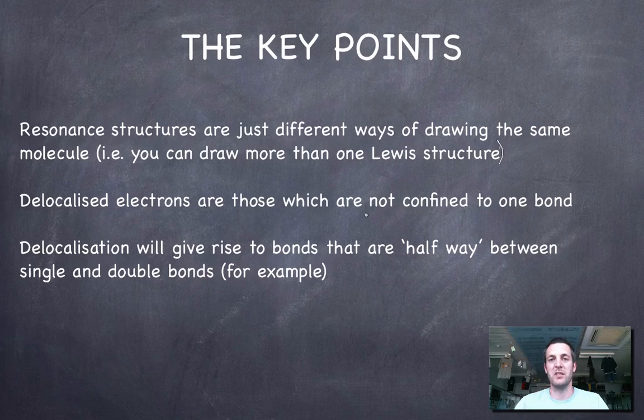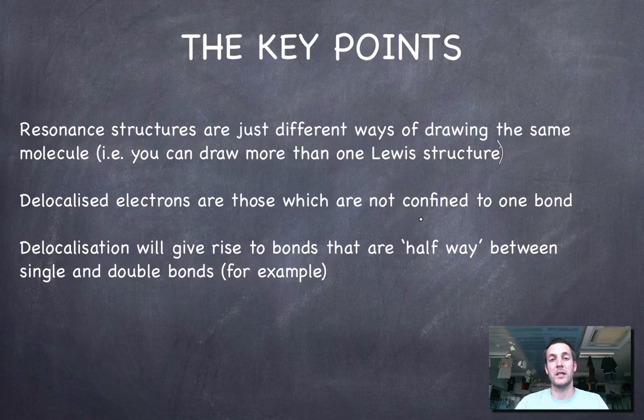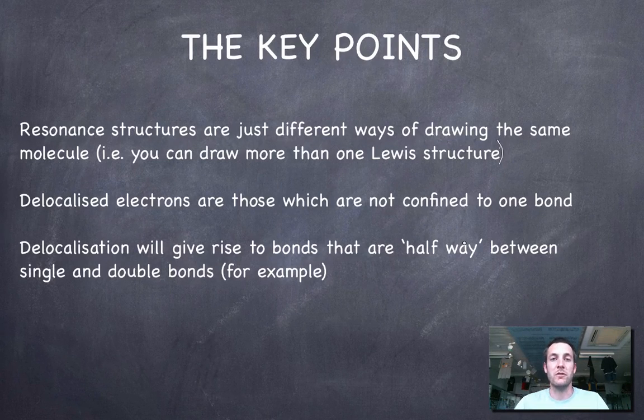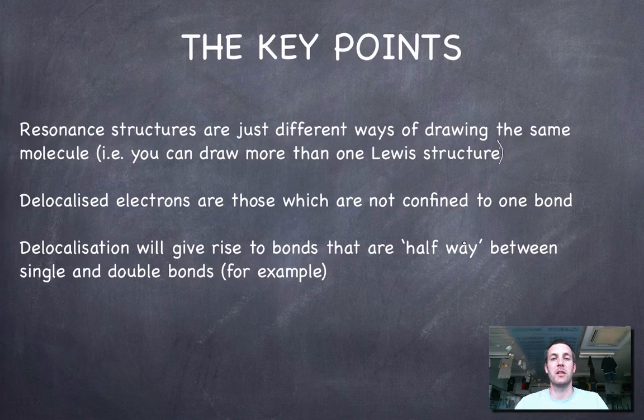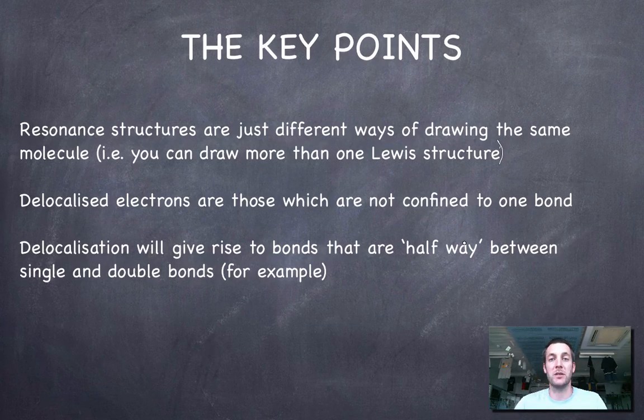You have to have the right number of pairs of electrons around things. Delocalized electrons are ones which we say are not confined to one particular bond. Instead of forming a double bond here and a single bond somewhere else, the electrons are forming a mixture of the two types of bonds everywhere. They're free to roam between a number of different atoms instead of just being stuck between two atoms.